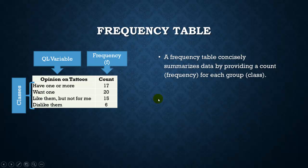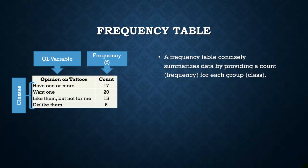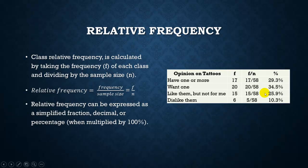F stands for frequency — add that to your symbol dictionary. Class relative frequency is calculated by taking the frequency and dividing by n. Sometimes it's useful to put the counts in context of the total number of people — what proportion or percentage said each response. For example, take the count of 17 and divide by 58, giving approximately 0.293, or about 29%. If you do this for each category, all the percentages should add up to 100% because everyone fell into one of the four categories. Relative frequency can be expressed as a fraction, decimal, or percentage.